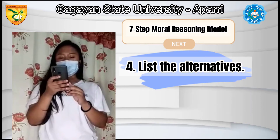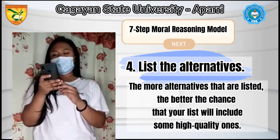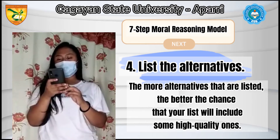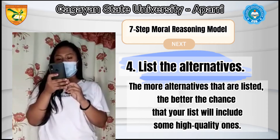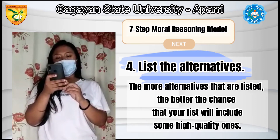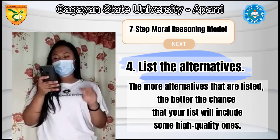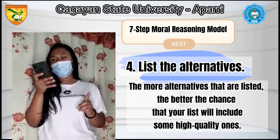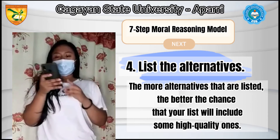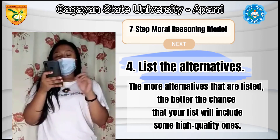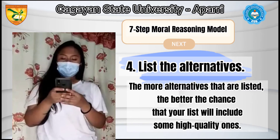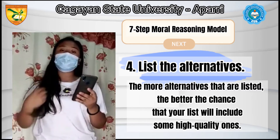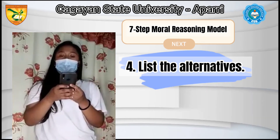Fourth, list the alternatives. This step includes coming up with various alternative courses of action as part of the creative thinking involved in resolving a moral dilemma. Though there will be some alternatives which can be ruled out without much thought, in general the more alternatives that are listed, the better the chance that your list will include some high-quality ones. It may also come up with some very creative alternatives not previously considered. For example, think of some solutions to the rumors spreading too quickly, solutions that could possibly or surely resolve the situation.